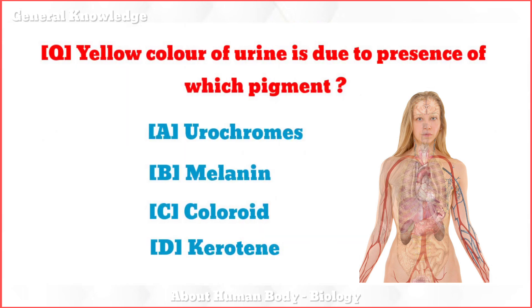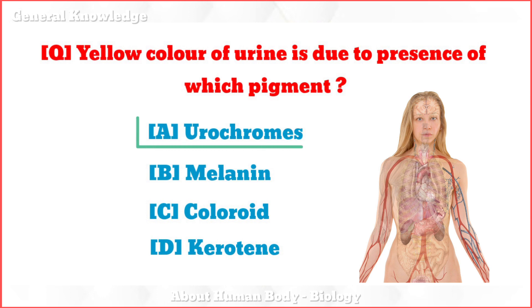The yellow color of urine is due to the presence of which pigment? The correct answer is option A: urochrome.